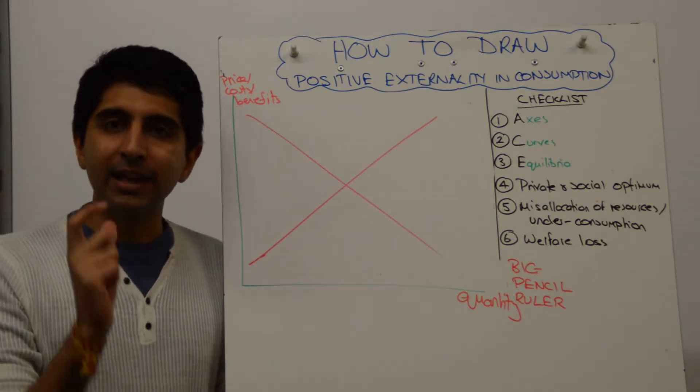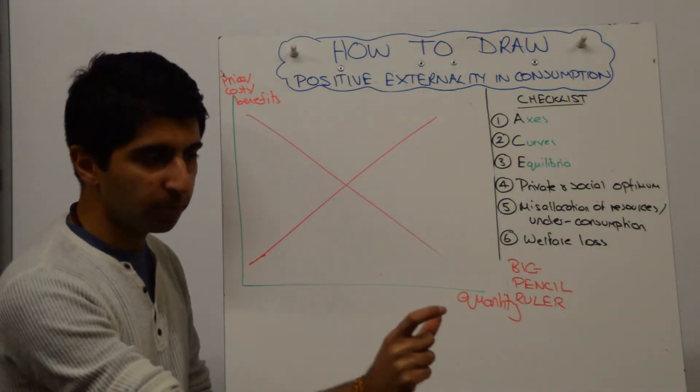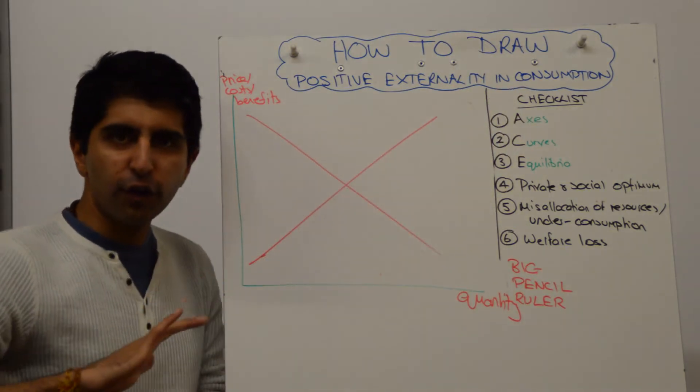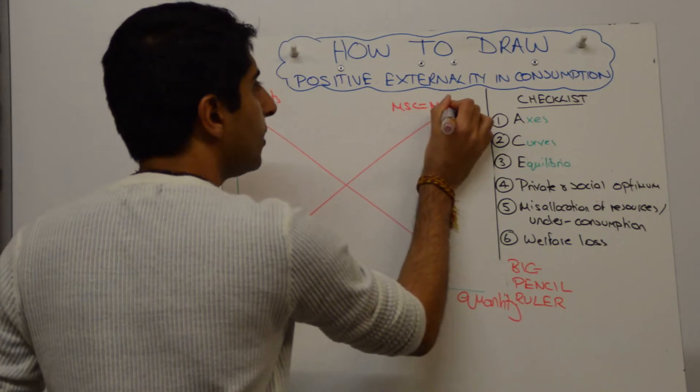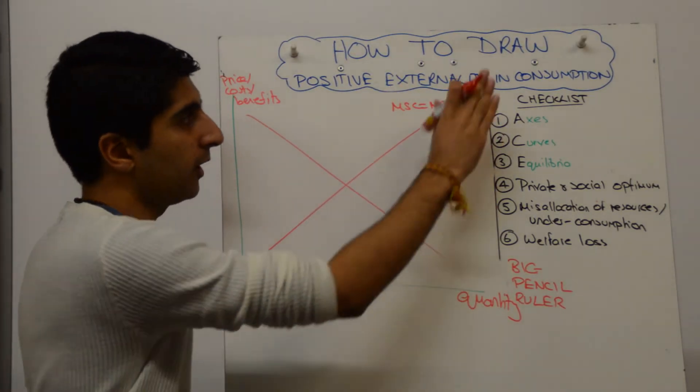Consumption tells us that there is an issue with the benefits curves. There is a discrepancy between the social benefit and the private benefit. We're not in production, so the cost curves are fine. Our MSC is equal to our MPC, which is equal to our supply curve. No issues there. We're not in production, we're in consumption.